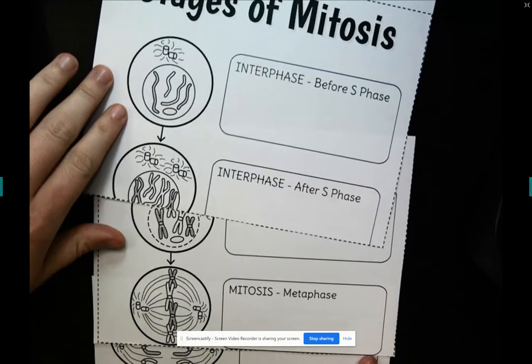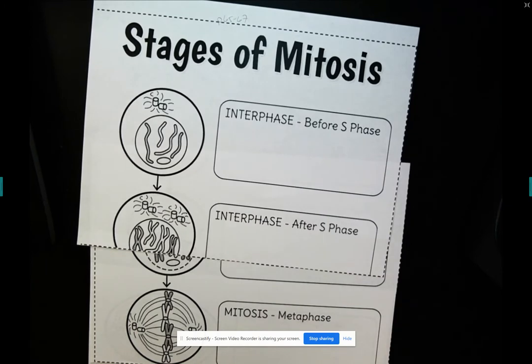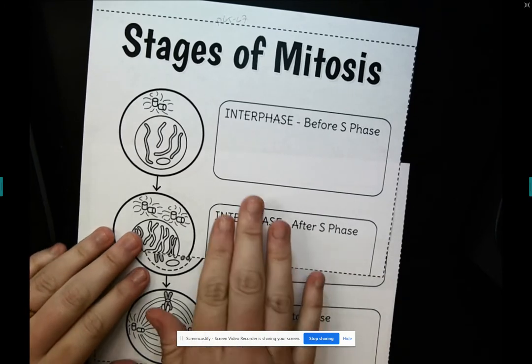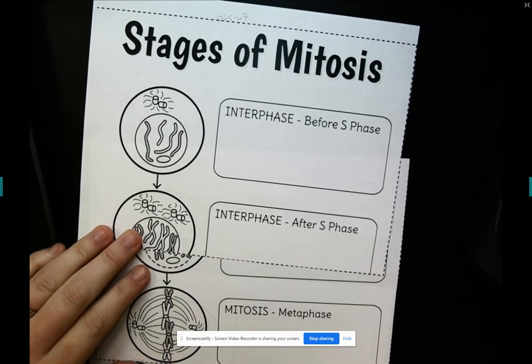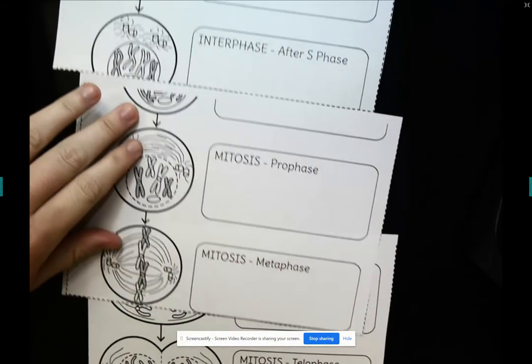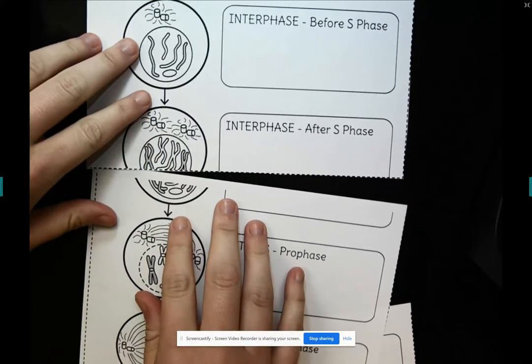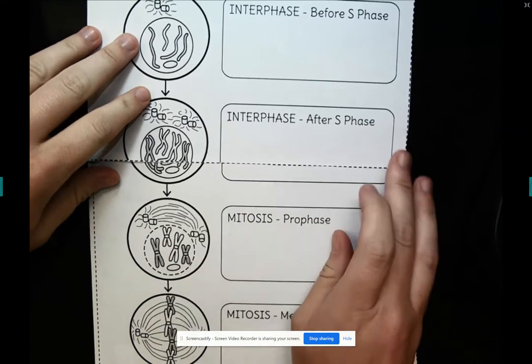Hey there, we're going to put together our stages of mitosis notes, and then I'm going to fill out the notes with you. So the first thing I did is I just cut them apart into the three pieces, and now what I need to do is tape it together.